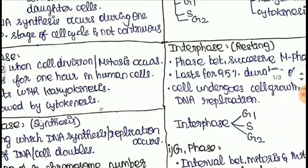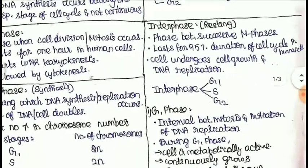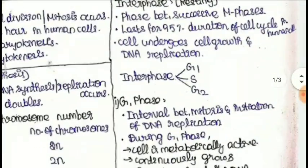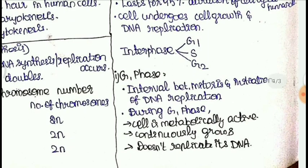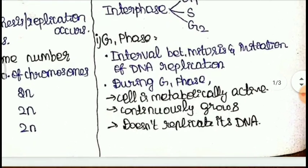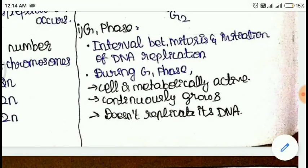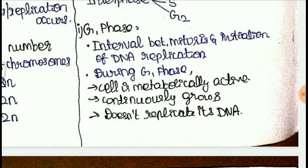Interphase is also called the resting phase. The phase between successive metaphases is called interphase. The cell undergoes cell growth and DNA replication in this phase. Interphase has three parts: G1, S, and G2. In G1 phase, the cell is metabolically active, continuously grows, and does not replicate its DNA.